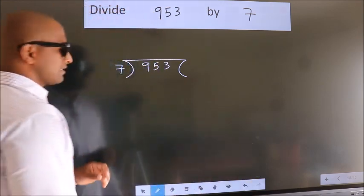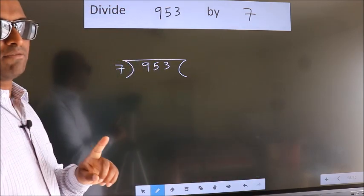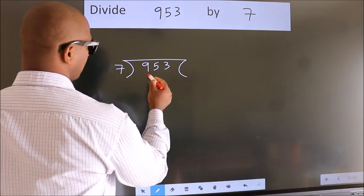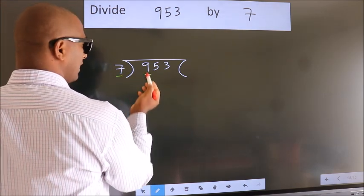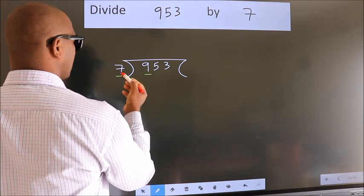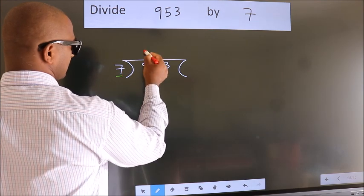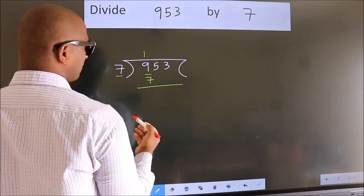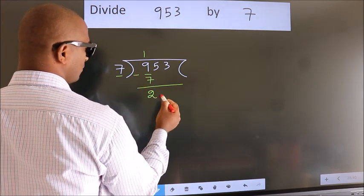This is your step 1. Next, here we have 9, here 7. A number close to 9 in 7 table is 7 once 7. Now, we should subtract. We get 2.